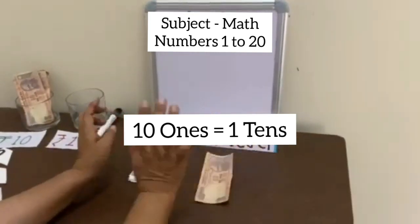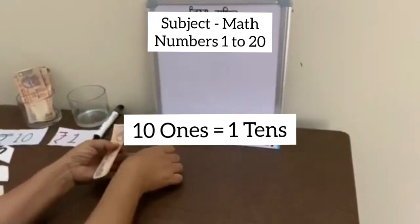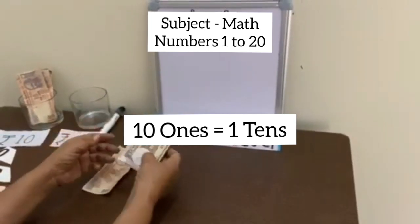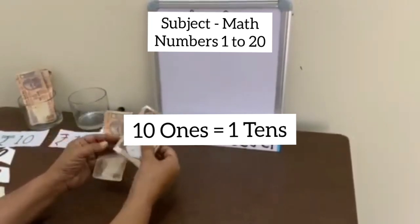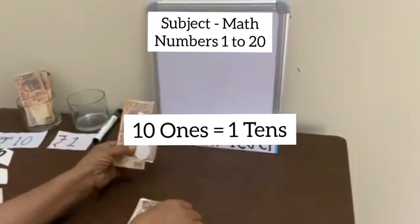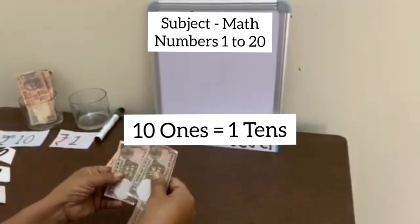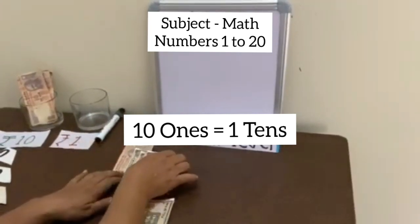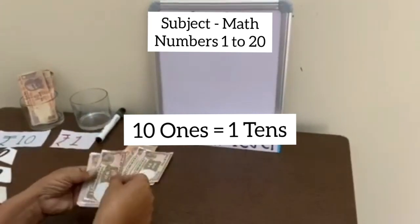Now we proceed further. 10 plus 1 is equal to 11. If we add 2 more notes of rupees 1, then it is 10 plus 3 is equal to 13.